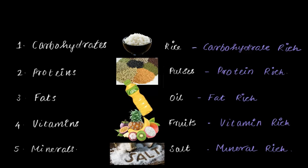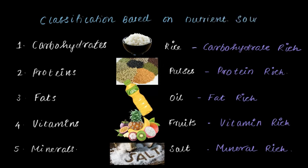So foods like rice, pulses, oil, fruits, and salt have been classified into carbohydrate-rich, protein-rich, fat-rich, vitamin-rich, and mineral-rich. Earlier we classified food based on its source as animal-based, plant-based, or other sources. Here is another classification based on the nutrient component of food — grouping food into carbohydrate-rich, protein-rich, fat-rich, vitamin-rich, and mineral-rich.